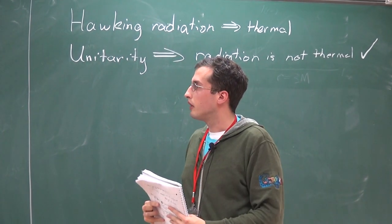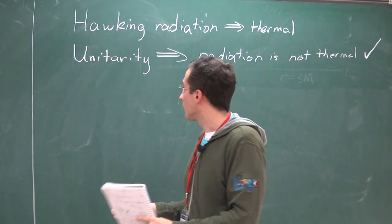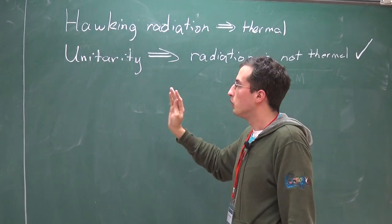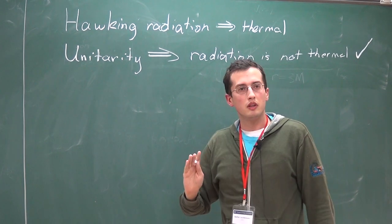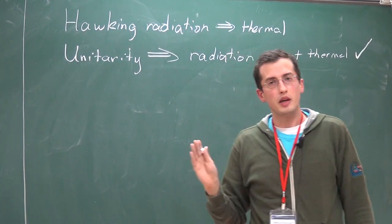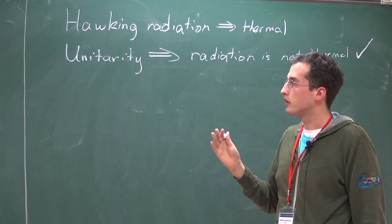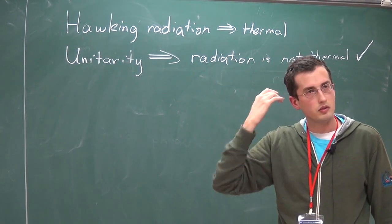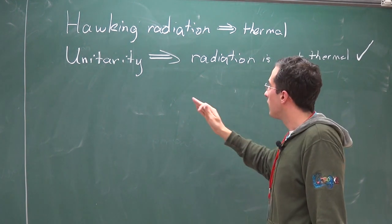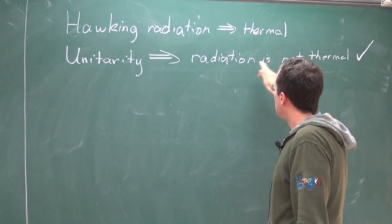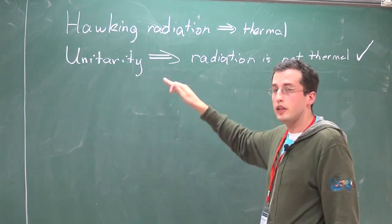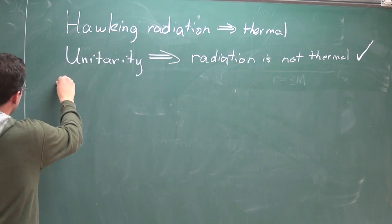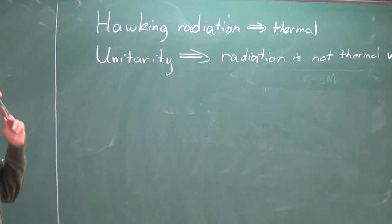We don't know how the information comes out, so we're apparently stuck. But when you don't know something about the black hole dynamics, there's a useful approximation sometimes made in quantum information. The application of this approximation to black hole physics is due to Don Page. Don Page back in 1993 tried to estimate how the information leaks out of the black hole, at what rate does the information come out. The approximation he used is basically the random state approximation.